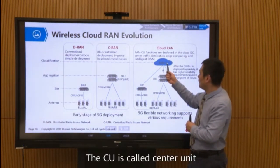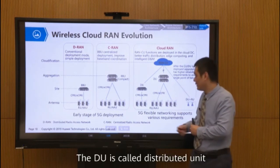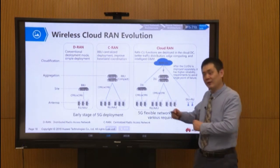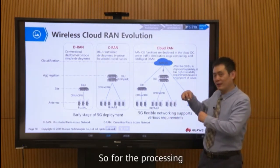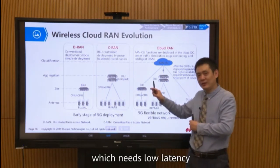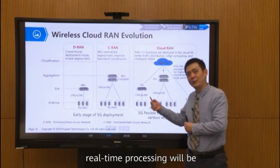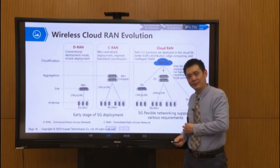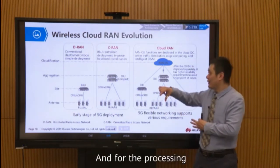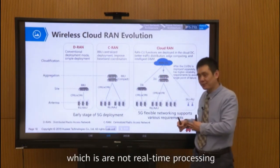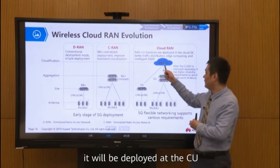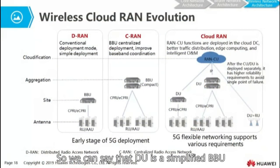The CU is called the Central Unit and the DU is called the Distributed Unit. Processing that requires low-latency, real-time handling will be in the DU at the base station site. Processing that is not real-time — usually control plane processing — will be deployed at the CU. So we can say that the DU is a simplified BBU.